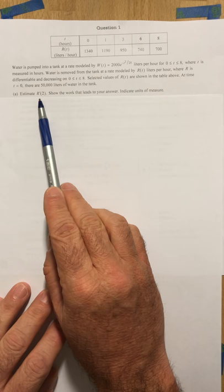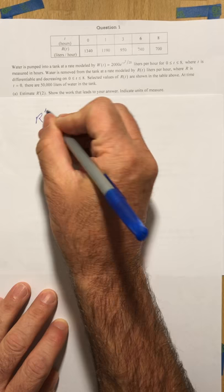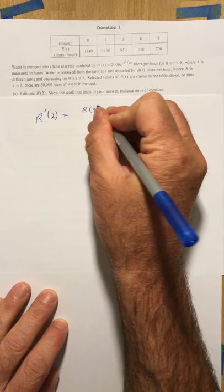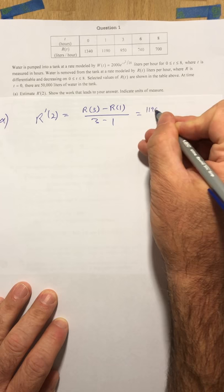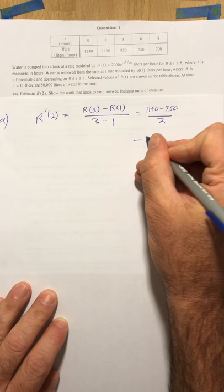Part A, estimate R prime of 2. There is no value of 2 in the table, so our best estimate here is going to be to estimate R prime of 2 by an average rate of change between 1 and 3. So that's going to look like this as a formula, and 1190 minus 950 over 2 ends up being negative 120.